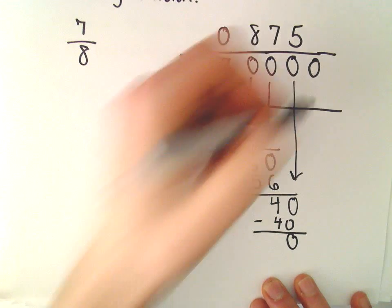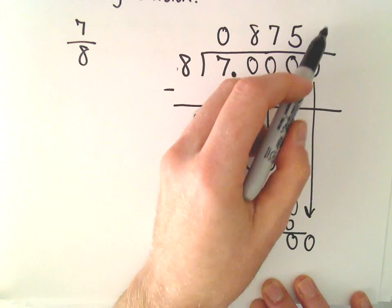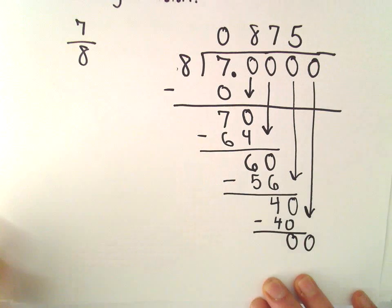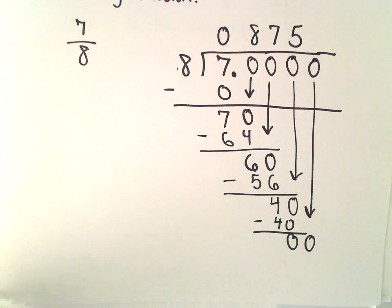And we would say well, eight goes into zero zero times, and we would just now start getting zeros forever and ever. Or since there's no remainder, that tells us that we have a fraction that we can write using a decimal representation where the decimal terminates.